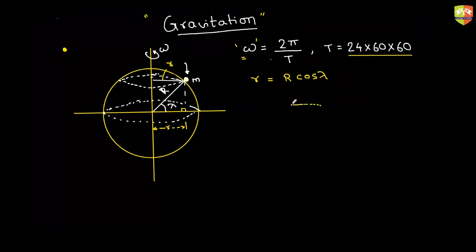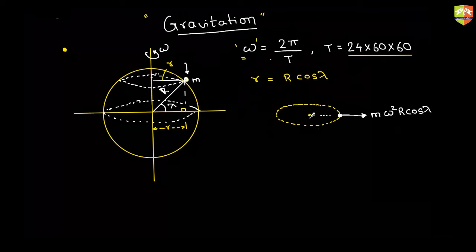Since the mass is moving in a circle of radius R cos(lambda), it will experience a centrifugal force in the outward direction equal to m omega squared times R cos(lambda). There will also be a force toward the center of the Earth equal to mg — whatever is the acceleration due to gravity on the surface, the force toward the center will be mg.